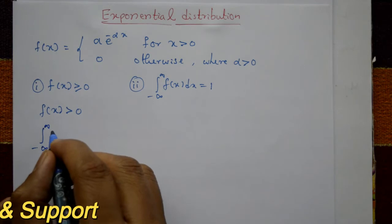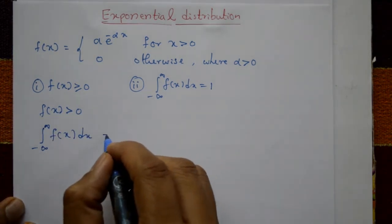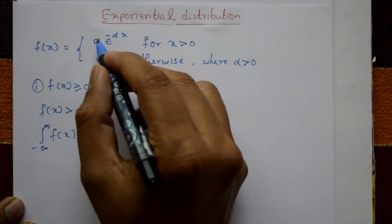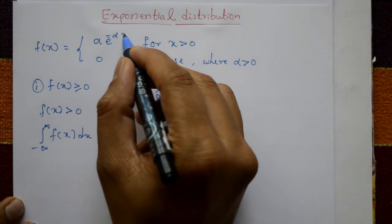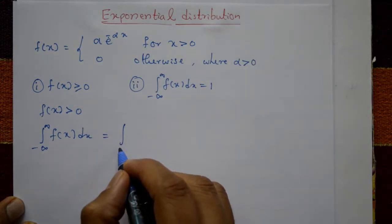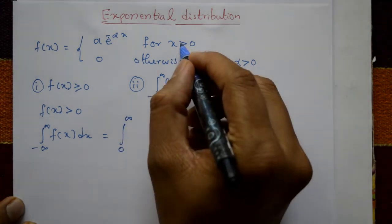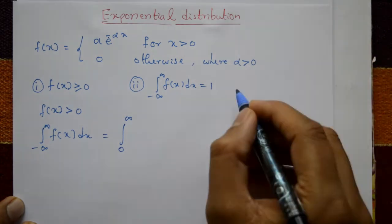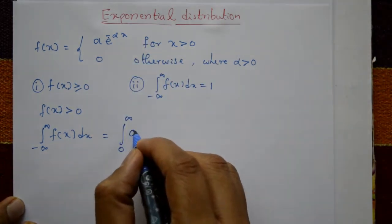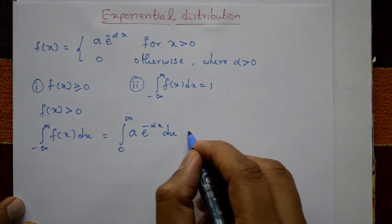The second condition is: integration from minus infinity to plus infinity of f(x) dx equals one. Since f(x) = α·e^(−αx) for x greater than zero, the integral becomes the integration from zero to infinity of α·e^(−αx) dx.